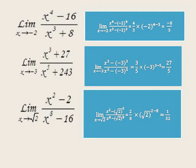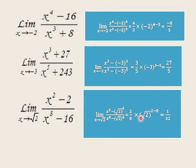Another example: limit as x approaches √2 of (x² minus 2) over (x⁸ minus 16). Rewrite: x approaches √2, so write x and √2. Powers: numerator m equals 2, denominator n equals 8. Check: (√2)² equals 2 — minus 2 correct; (√2)⁸ equals 16 — minus 16 correct. Value equals (2 over 8) times (√2)^(2 minus 8) equals (1 over 4) times (√2)^(negative 6) equals 1 over (4 times 8) equals 1 over 72.